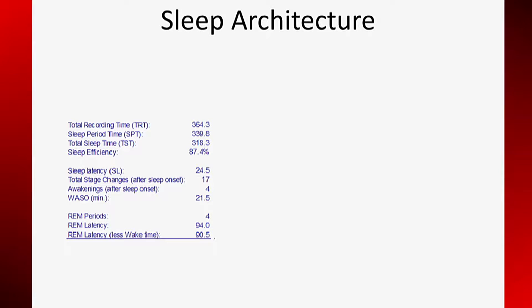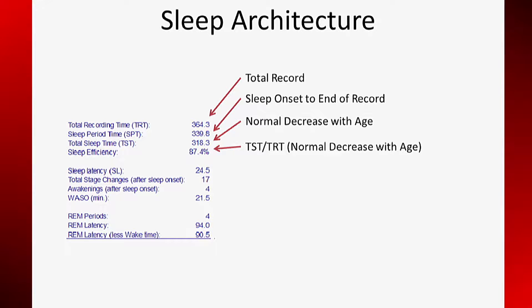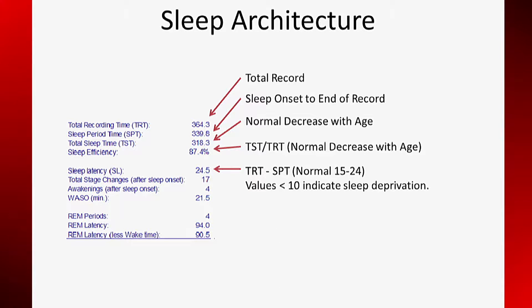Data tables within the scored report attach numbers to what we see in the graphic summary. The total recording time is self-explanatory. The sleep period time is the time from sleep onset to the end of the record. The total sleep time is the total time spent in any of the sleep stages, and the normal value decreases with age. Sleep efficiency is the ratio of total sleep time to total recording time — a ballpark figure for normal is 85%, but the normal value decreases with age. Sleep latency is the time to sleep onset and can be calculated as total recording time minus sleep period time. I use 15 to 24 minutes as the normal range, though these vary with age.